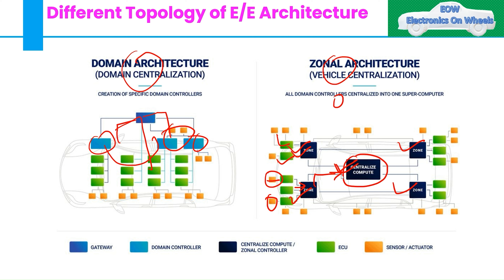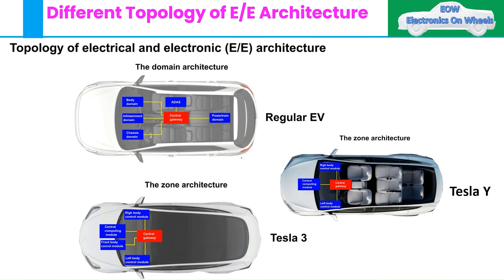Today let me be specific about Tesla — how they have progressed in the EE architecture. We will see their three models and what the traditional architecture looks like. Let's go specifically to Tesla in today's video, and in the second video we will see the advantages of domain architecture and zonal architecture, the pros and cons, and how it affects your wiring harness.